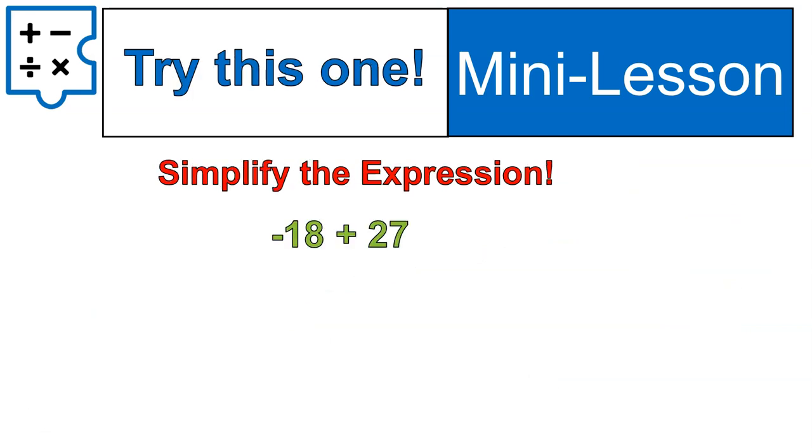because it sometimes takes two steps. I want you to try this one out. Negative 18 plus 27. Try simplifying that expression and then come back and I'll go through my solution for it.